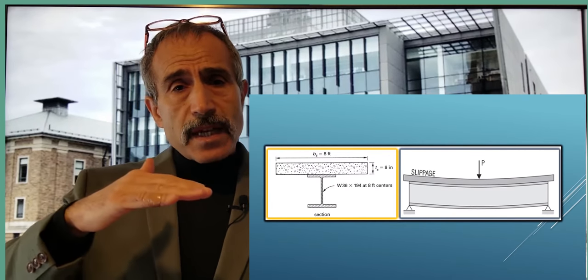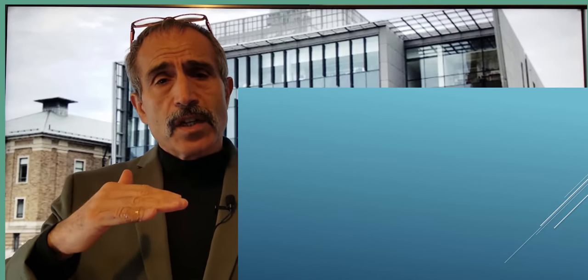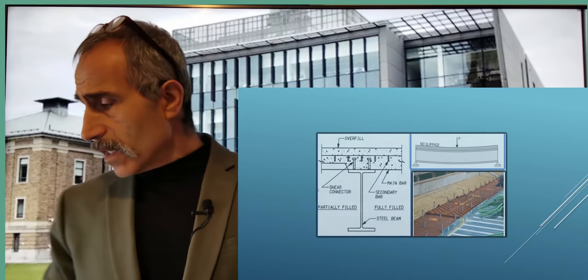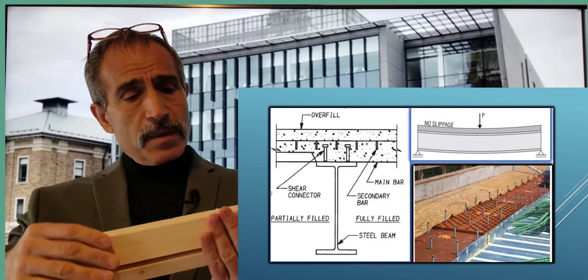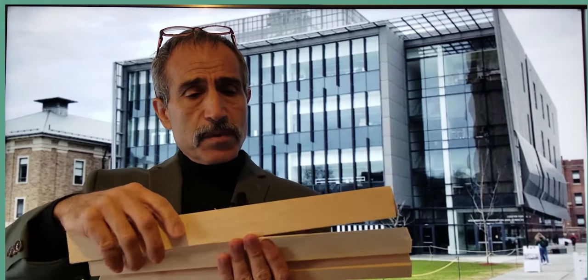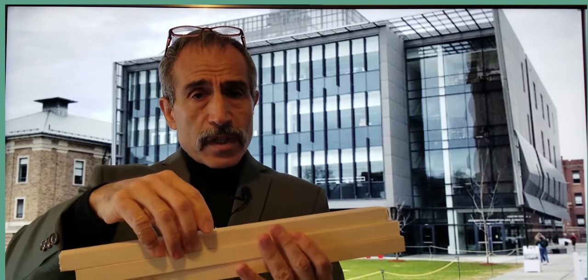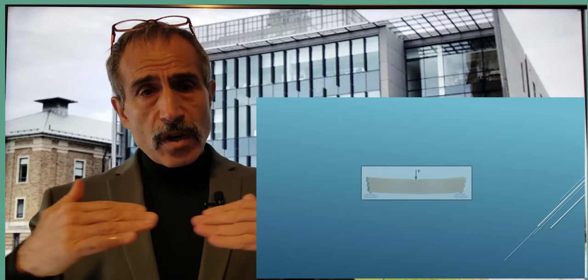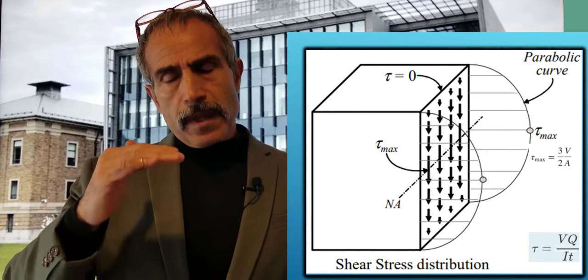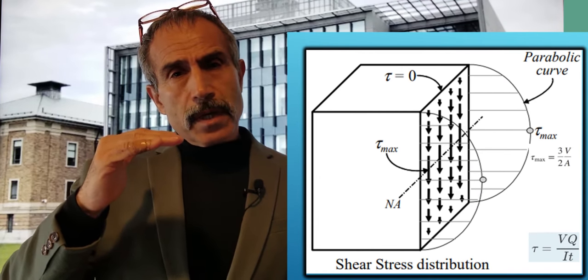That's why when you look at a bridge deck with a concrete deck or a building slab over a beam, they can slide over each other — that's why we put a shear connector there to prevent sliding. If we have a beam made of multiple stacked pieces with smooth surfaces between them and it's subjected to a load and bends, those pieces move over each other, so there's a shear stress acting in the horizontal direction.